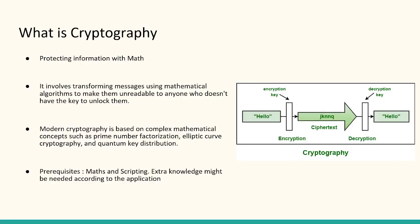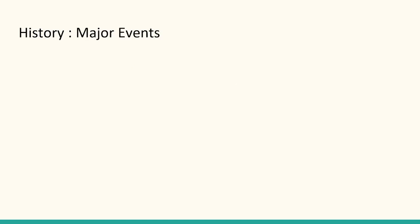I'll be explaining about cryptography. What is cryptography? Cryptography is protecting information with math. We can use several mathematical algorithms to make our message unreadable to normal users — only the one who has the key can read it. Modern cryptography requires concepts like prime factorization, XOR, elliptic curve cryptography, and quantum key distribution. The prerequisites are math and scripting — Python is preferred, and extra knowledge may be required for specific concepts.